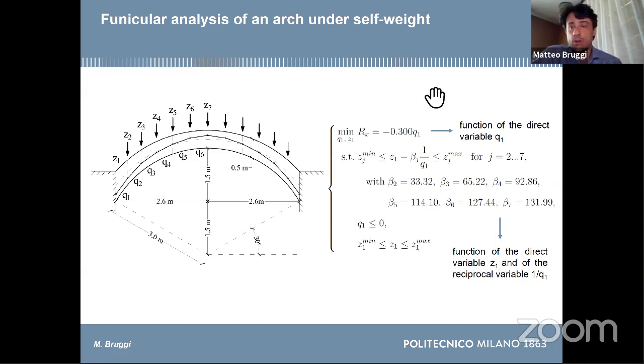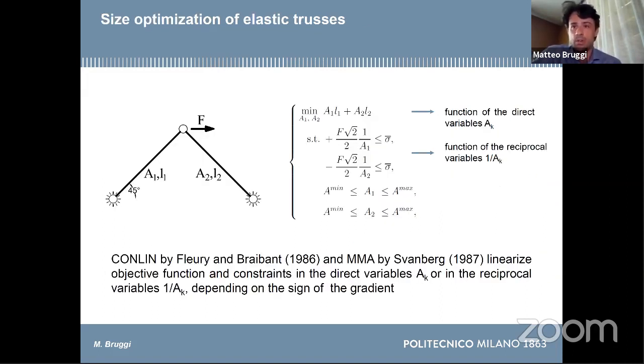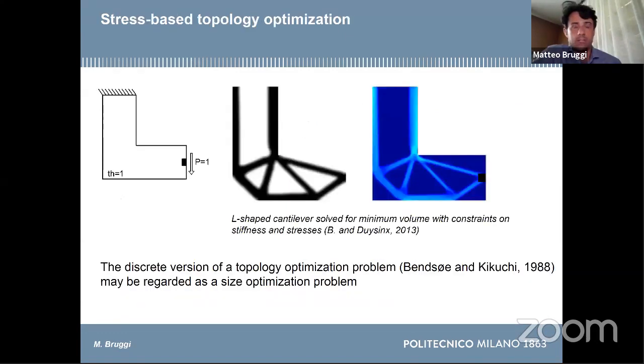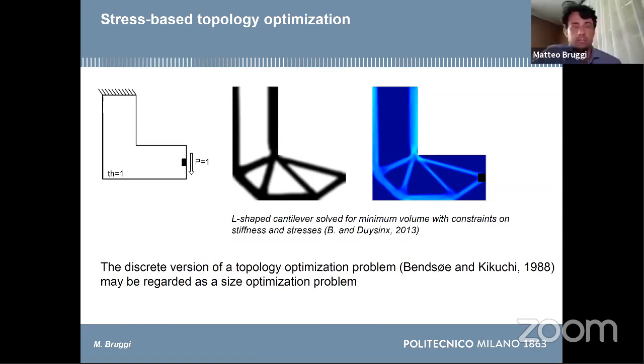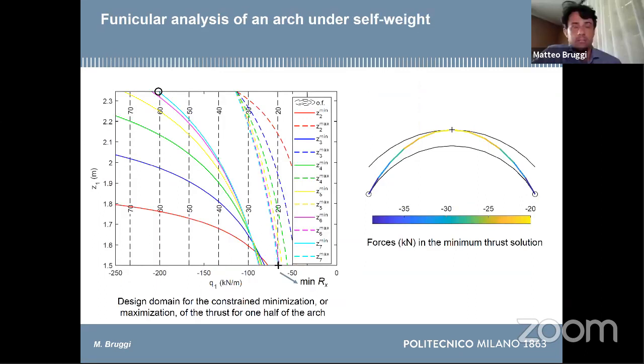These analytical forms are similar to those in the classical problem of size optimization of linear elastic structures, where you're interested in defining the cross-section such that the weight is minimized with constraint on the stresses. For this kind of problem, there exist specific methods of sequential convex programming able to handle this kind of approximation, CONLIN and MMA for example. These methods are already used in topology optimization problems with stress constraints. The idea is to use this mathematical programming to cope with this simple problem.